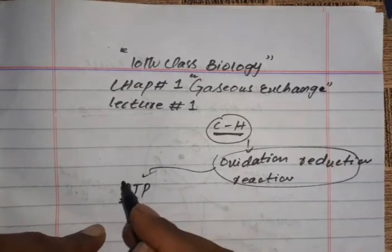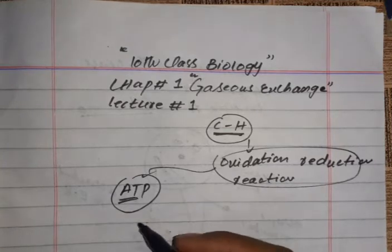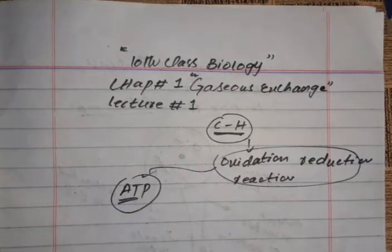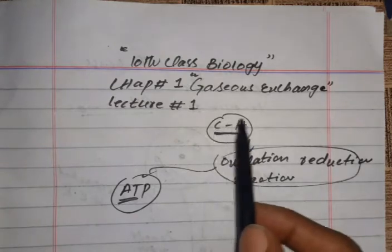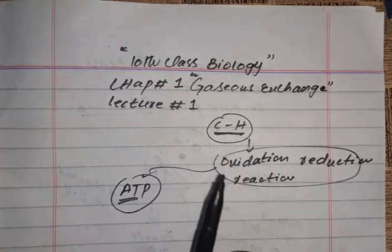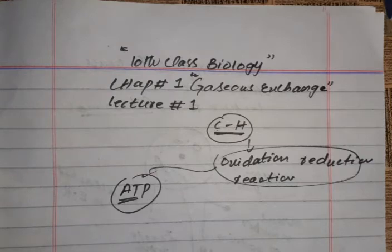ATP — adenosine triphosphate — is produced. The carbon and hydrogen bonds in food are broken by the oxidation-reduction reaction and this energy is produced and transferred. Now let's talk about two activities here, which are cellular respiration.